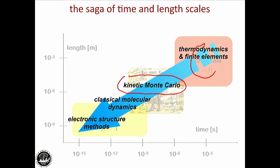Different length and time scales require different theoretical tools. We go from the macroscopic scale — the scale of classical electromagnetism, classical thermodynamics, and finite elements — down to methods characterized by a high degree of stochasticity, and further down to kinetic methods such as kinetic Monte Carlo, classical molecular dynamics where you solve Newton's equations of motion for the nuclei, and finally to the realm of electronic structure methods that are the topic of this week's course.